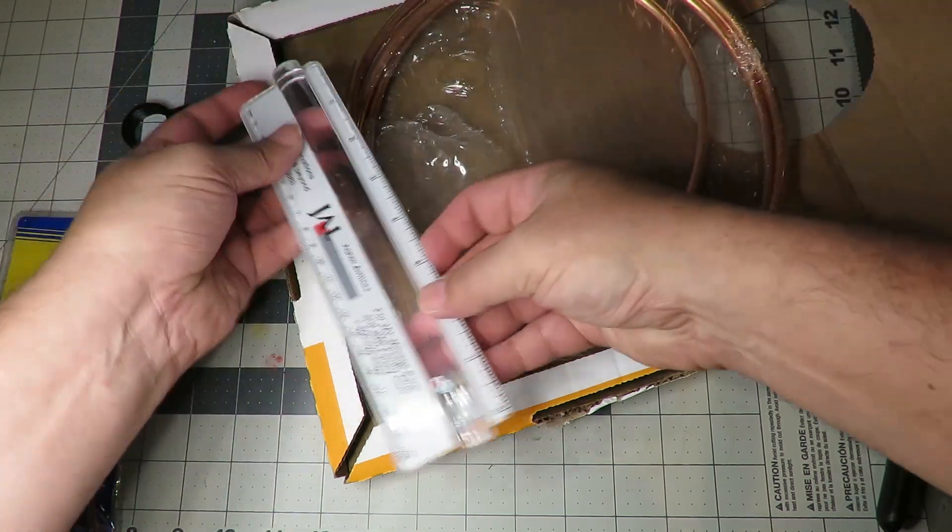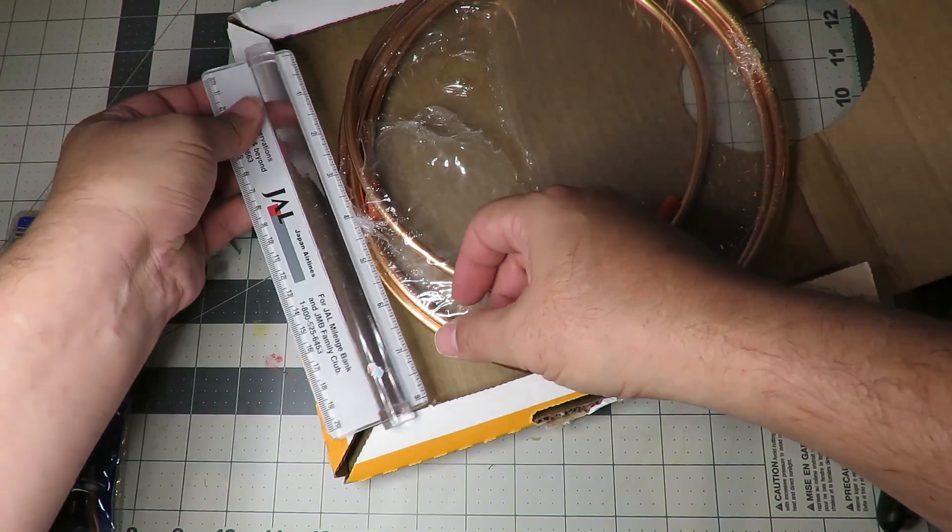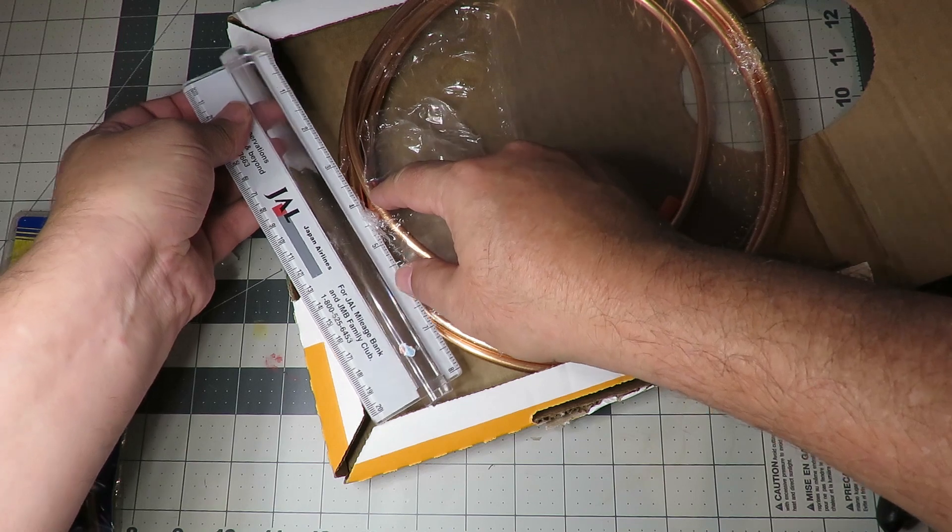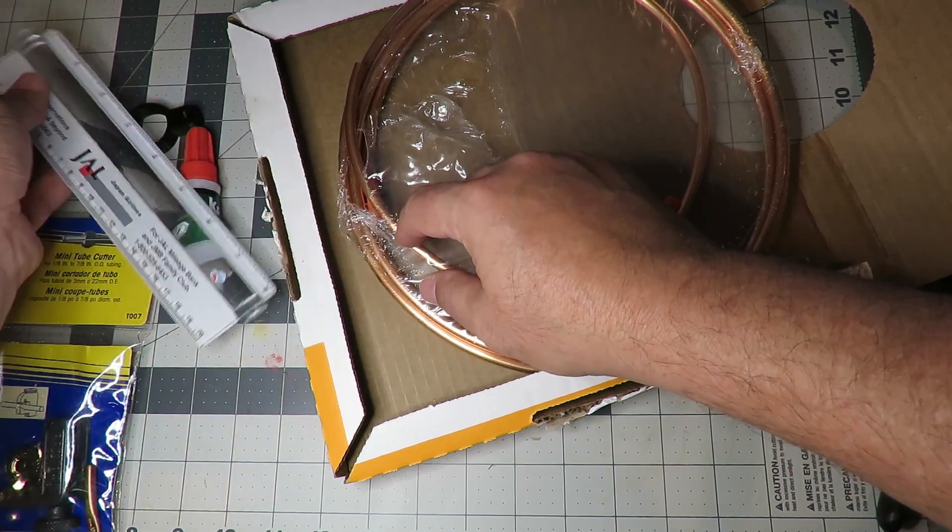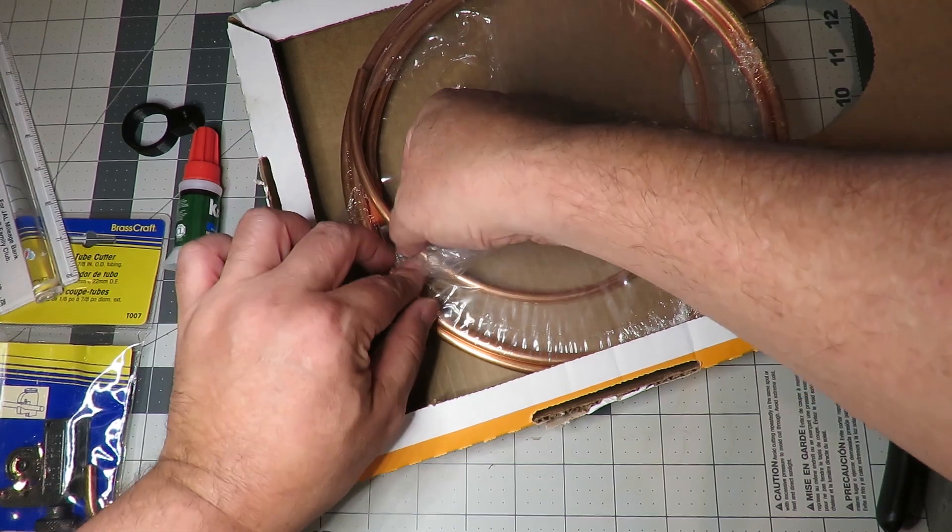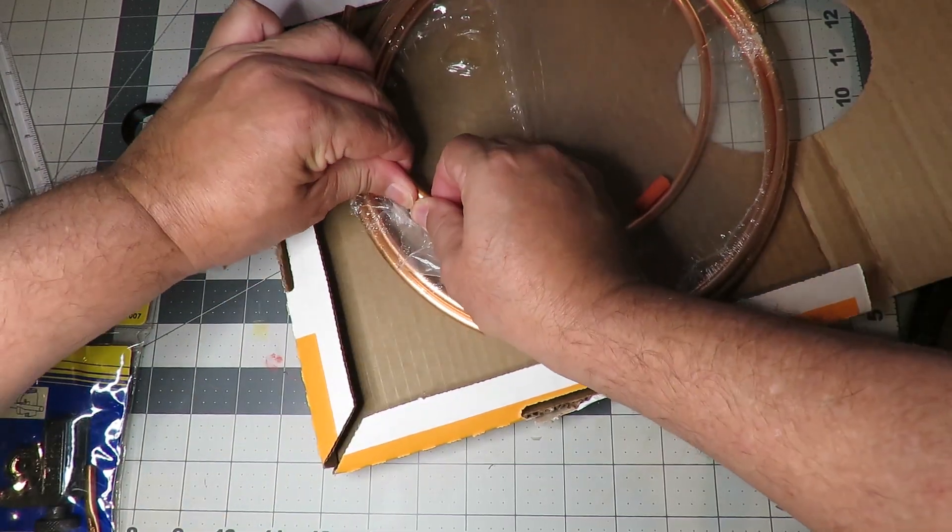Measure out three and a half inches to four inches of copper tubing and cut it using a tubing cutter. You can use a pair of cutting pliers or a hack saw, but that will leave the edges ragged and or the tubing flat where you want it to be perfectly round.